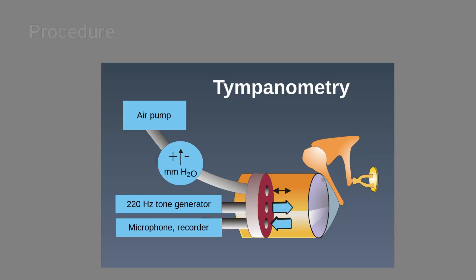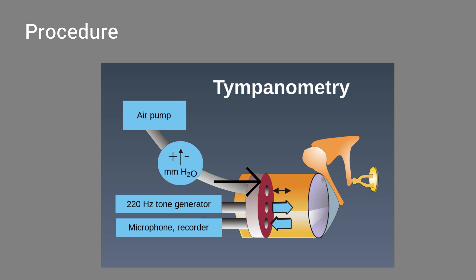The probe which snugly fits into the external auditory canal has three channels. One is to deliver a tone of 220 Hz, another is to bring about changes in the air pressure in the canal from positive to normal to negative, and another one is to pick up the reflected sound through a microphone.